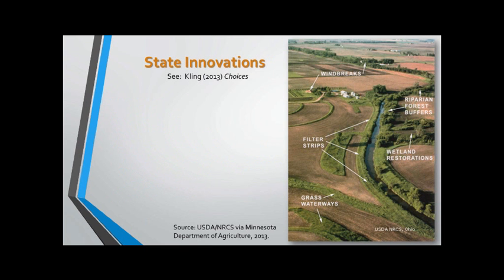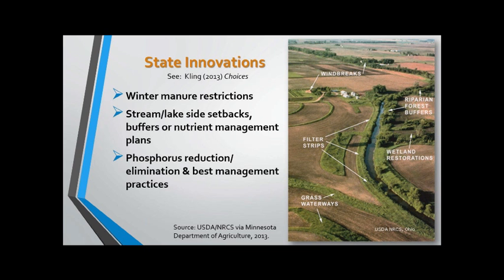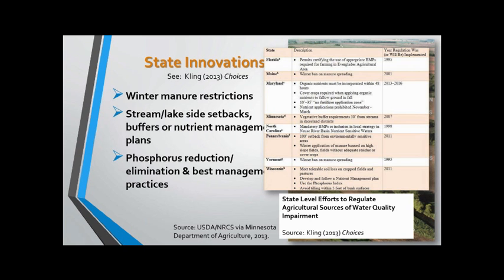There have been innovations at the state level: manure restrictions in some states, setback requirements along streams, lakes, and rivers in others, and enhanced phosphorus reduction efforts and best management practices — for instance, the Everglades has been a major driver in this area. I call your attention to the article by Kathy Kling in the Choices volume, where there's an effort to catalog many of the state-level innovative programs.